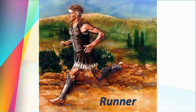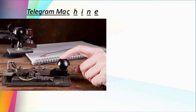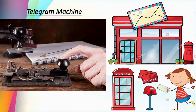A runner used to run from one place to another to deliver important messages. He never rested in between — always running — so he was called a runner. After that, the telegram machine came into use for sending important and short messages. Then postal services came into use. But all these methods were very slow compared to modern methods.